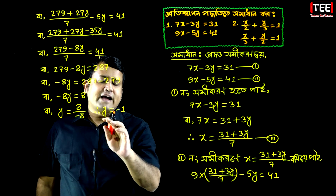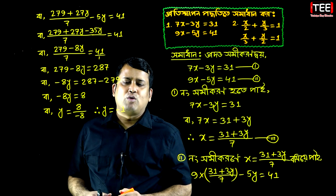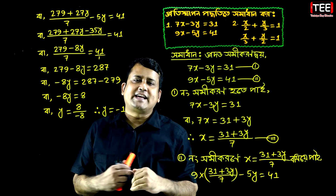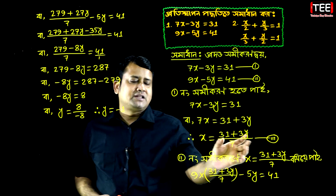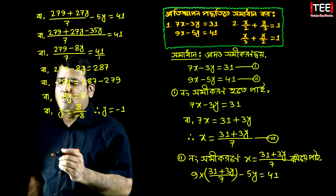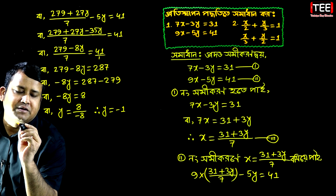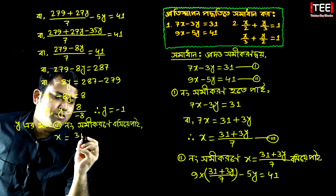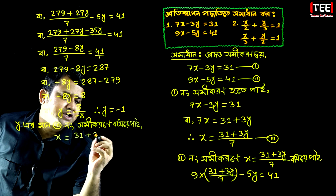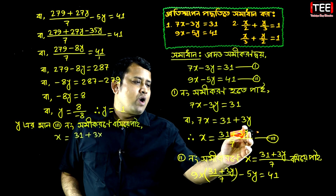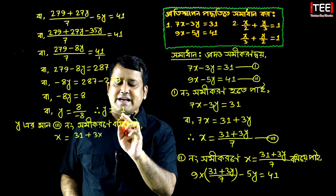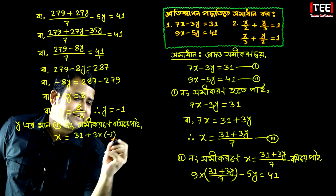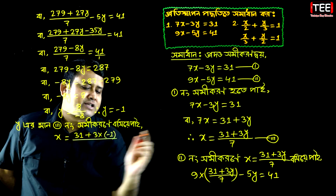Minus 1. So minus 1, minus 8 is equal to minus 1. Equal to 31 plus 3 into — we can see y is equal to minus 1. So y is equal to minus 1.